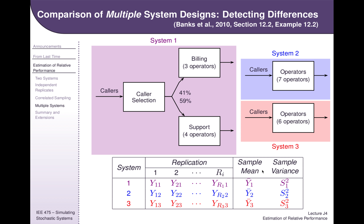So if we care about the type one error rate for the entire family, we need to adjust the type one error rate for each individual pairwise comparison. We would also like to adjust our comparison strategy so we don't end up needing to run a whole lot of simulations of every different system. What we might find is that system two and system three are both a lot better than system one, because neither of them have the caller selection. So I might do one test where I run all three systems and determine that two and three are clearly better than one, but I can't tell the difference between two or three. Then I run another set of comparisons just on two and three — and we need to make sure we're doing that in a statistically rigorous way.